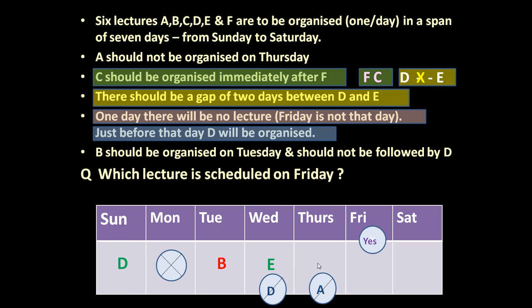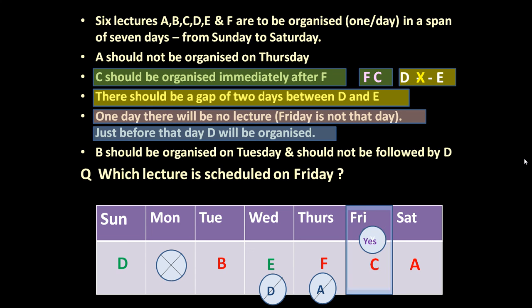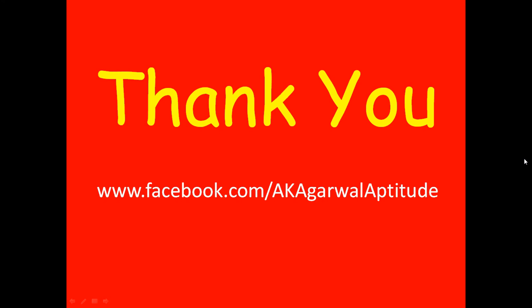F and C must be together. Thursday should not have A. If F is on Thursday and C is on Friday, then A would be on Saturday — which is permitted since A is only restricted from Thursday. So A is on Saturday, Thursday has F, and Friday has C. Therefore, the lecture scheduled on Friday is C. Thank you very much for watching this video. You can also follow me on Facebook.